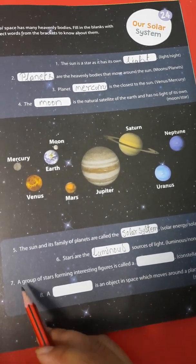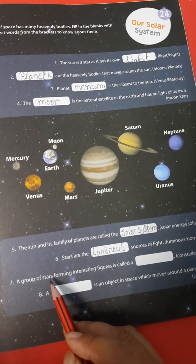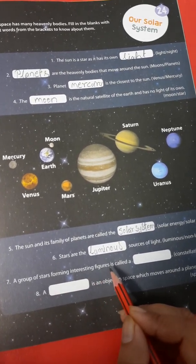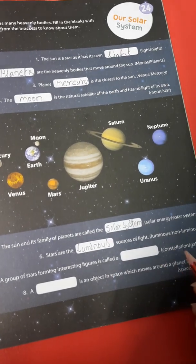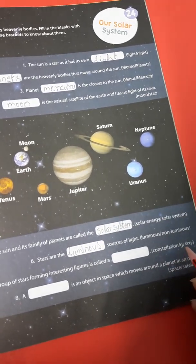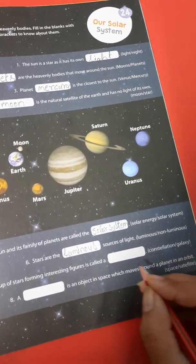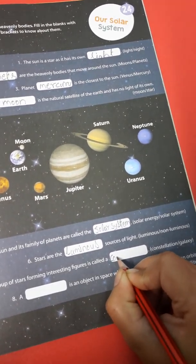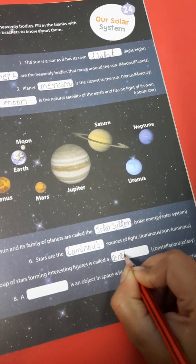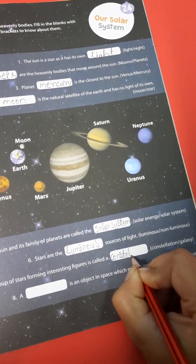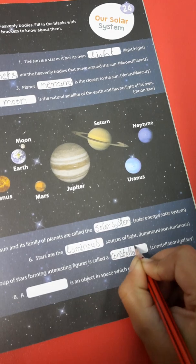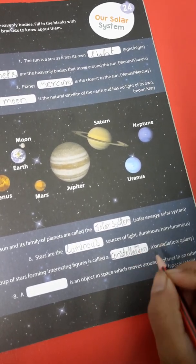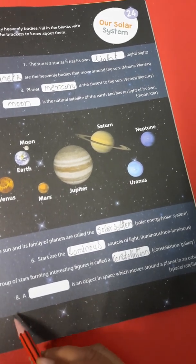Number 7. A group of stars forming interesting figures is called a constellation or galaxy? It's constellation. You write here: C-O-N-S-T-E-L-L-A-T-I-O-N. Constellation.